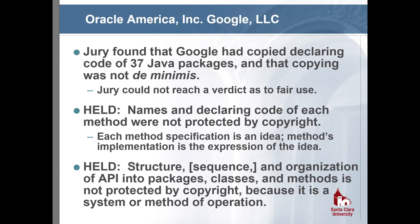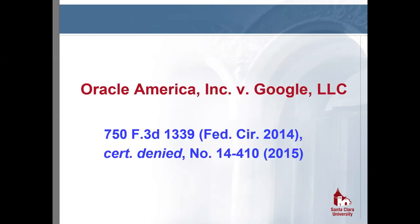The district court found that, except for some minimal literal copying, Google did not infringe Oracle's copyright. Note that Sun Microsystems — which developed Java — never sued Google; Oracle only sued after acquiring Sun. The case went to the Federal Circuit rather than the Ninth Circuit because patent claims had been joined with the copyright claims at the district court level; those patent claims were resolved in Google's favor and were not being appealed.